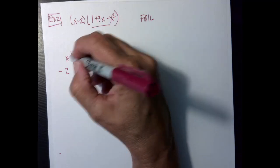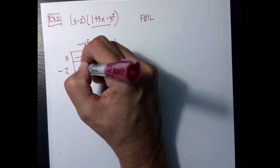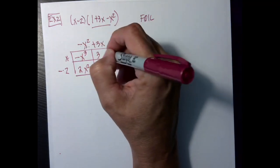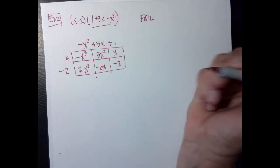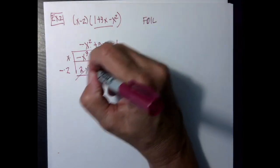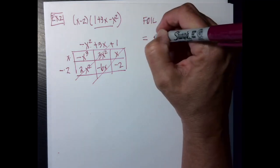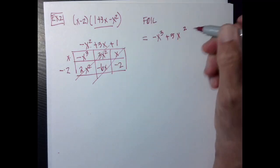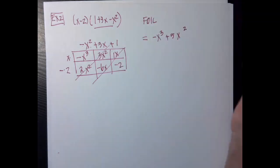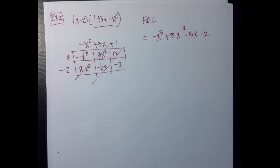When I multiply these two terms together I'm going to get negative x to the 3rd. A negative and a negative is a positive 2x squared. 3x times x is 3x squared. This is negative 6x. This is x, and this is negative 2. The reason that I like this method is my like terms are along the diagonals. So my solution is negative x cubed, 2 plus 3 is plus 5x squared, and then negative 6 and positive 1 is minus 5x, and then minus 2.